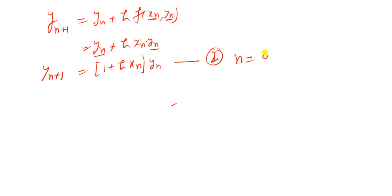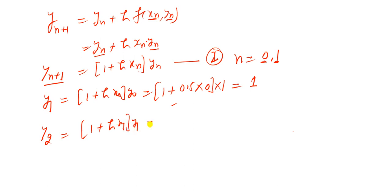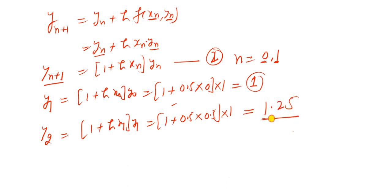Here n varies from 0 to 1. When n = 0, we obtain y1 = (1 + h * x0) * y0 = (1 + 0.5 * 0) * 1 = 1. When n = 1, we obtain y2 = (1 + h * x1) * y1 = (1 + 0.5 * 0.5) * 1 = 1.25. Simplifying with the calculator, we obtain y2 = 1.25.